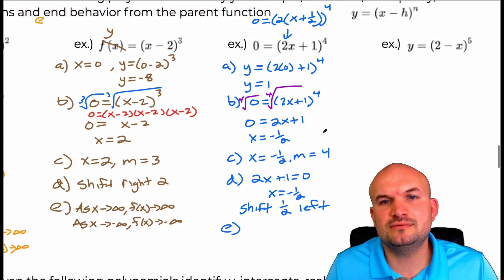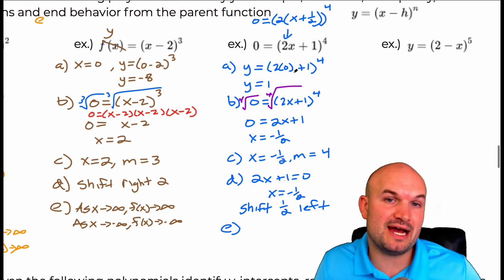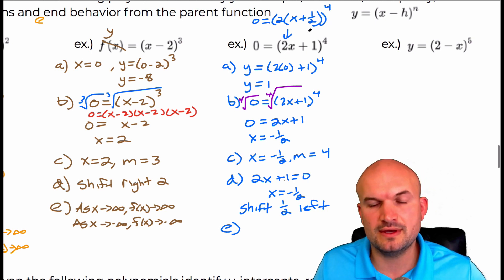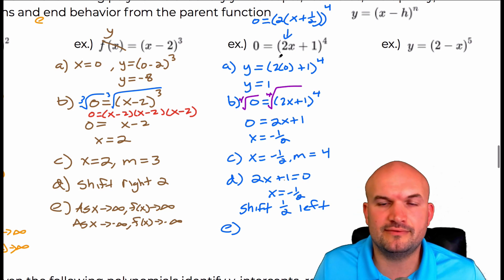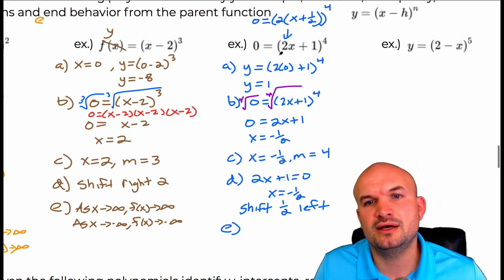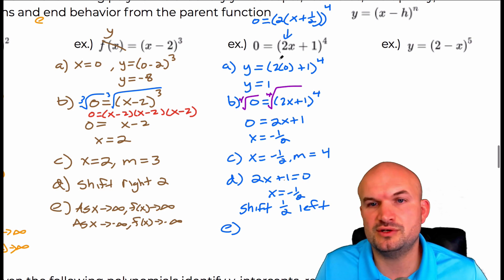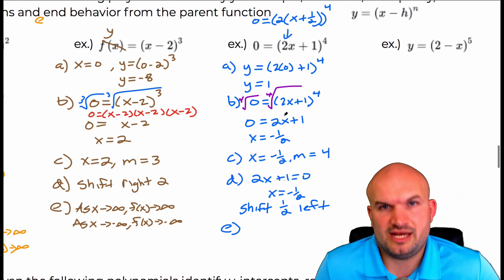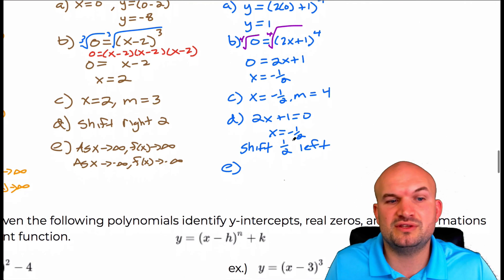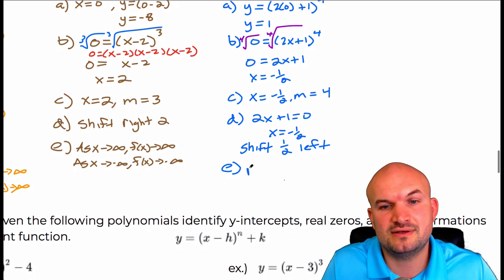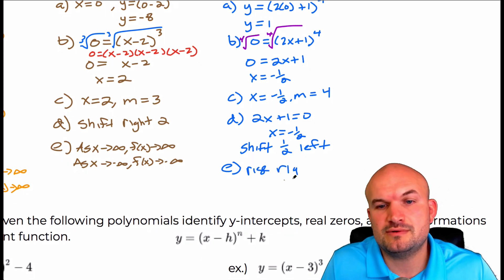To find the end behavior, the highest power would be x to the fourth. The leading coefficient — whatever it is, it's going to be positive. So this is going to be rise right and rise left. Rise right and rise left.